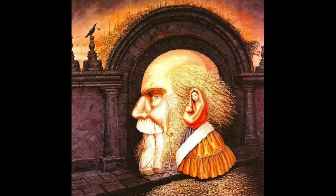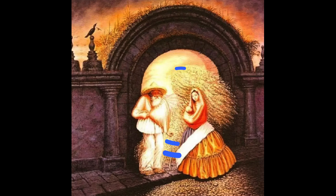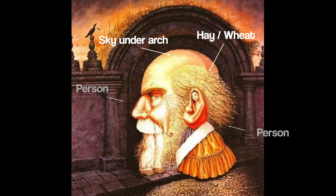For those of you waiting to see where all nine faces were in the image, let me show you now. Importantly, your mind is perceiving faces where really there aren't any — the big face in the middle isn't actually there. There is sky under the arch in the background, hay over here, and people, but your mind is perceiving it as a whole and seeing a face.